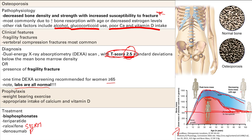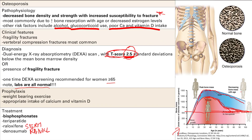Denosumab is an antibody against the RANK ligand. Remember, RANK ligand activates osteoclasts — it's like giving cash to the osteoclast to activate them. This antibody prevents RANK ligand from binding RANK on the osteoclast, so you don't get osteoclast activation and you have less osteoclast activity. That's it for part one of bone pathology.